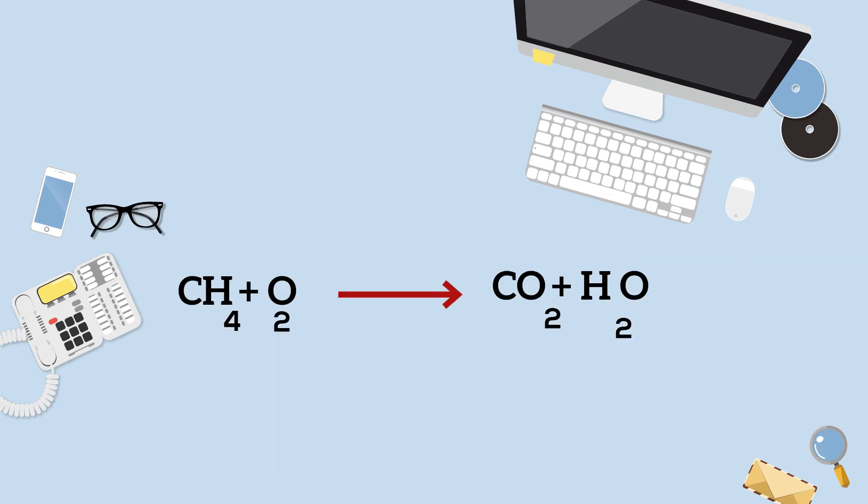So there we go, chemical equations, reactants on the left, products on the right, and the arrow tells you that it produces.